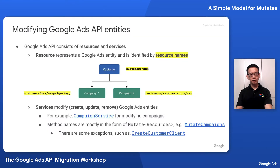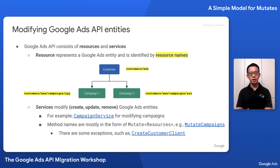The Google Ads API is centered around two main concepts: resources and services. A resource represents a Google Ads entity such as campaign, ad group, or ad group ad that you might already be familiar with, and it is identified by a resource name. For example, a customer has its own resource name, customer slash triple X, and its campaigns have resource names incorporating their parent entity, such as customer slash triple X slash campaigns slash their IDs.